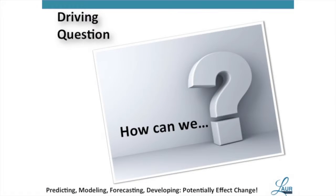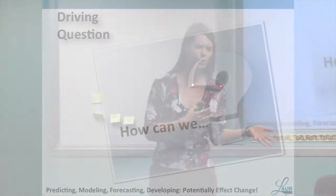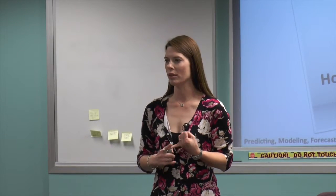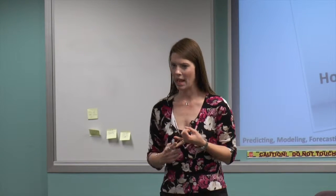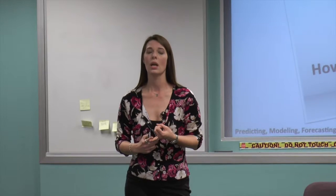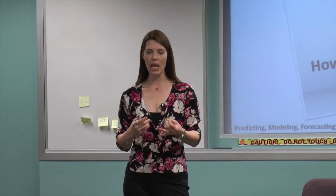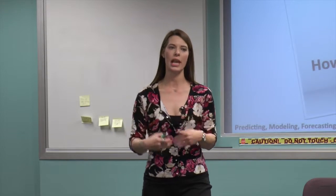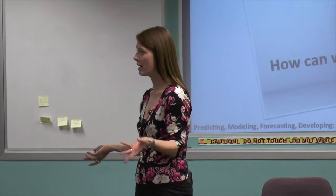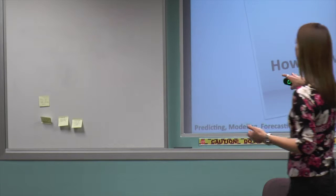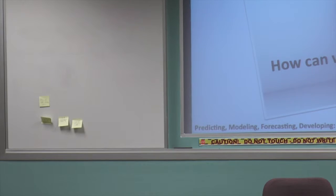With our driving question — we talked about this last week a little bit. There weren't really any stickers up here, and I heard 'I wasn't thinking driving question' and 'I'm not sure if they had one.' They talked about two questions: 'How does art reflect the community?' and 'How does science, math, and engineering connect to art?' Those were the questions they used to guide the project. For me, I would have written the driving question as 'How can we create art to reflect our community?' because we want that open-ended question. I like 'how can we' because it becomes actionable — we want students predicting, modeling, forecasting, and developing so that they can potentially affect change.